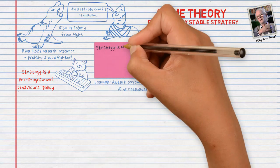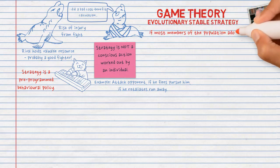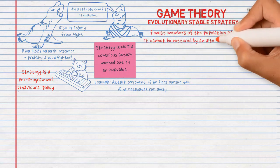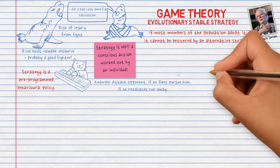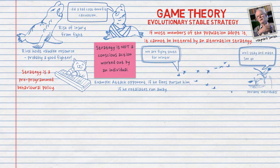Note, we are not talking about strategy as a conscious action worked out by an individual. An Evolutionary Stable Strategy, or ESS, is defined as a strategy which, if most members of the population adopt it, cannot be bettered by an alternative strategy. In other words, it is the best strategy an individual should adopt depending on what the majority of the population are doing. If an individual in the population is trying to maximize its own success, the strategy will be the only one that persists and cannot be bettered by deviant individuals with alternative strategies. Under ESS, selection would penalize deviations.